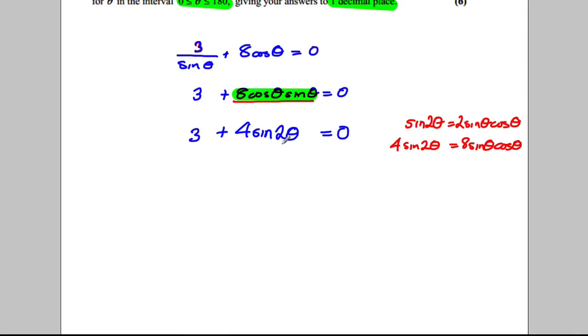The reason why that's so useful is that this thing here has cosines and sines in it, so how can you solve that? But here we've just got one function, one trigonometric function, sine of 2θ. So rearranging this, 4 sine of 2θ would be equal to negative 3, and sine of 2θ would be equal to negative 3 quarters.